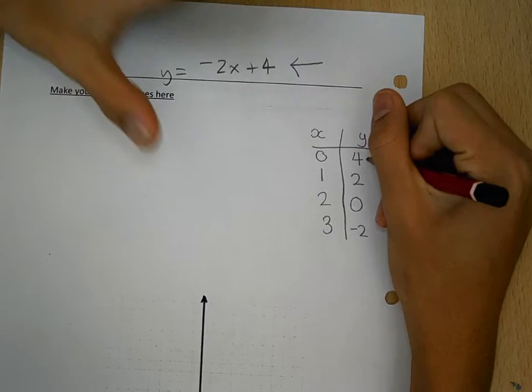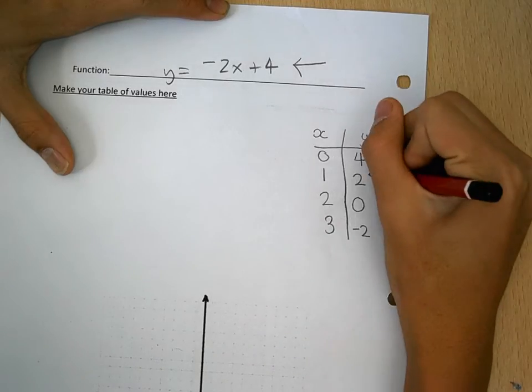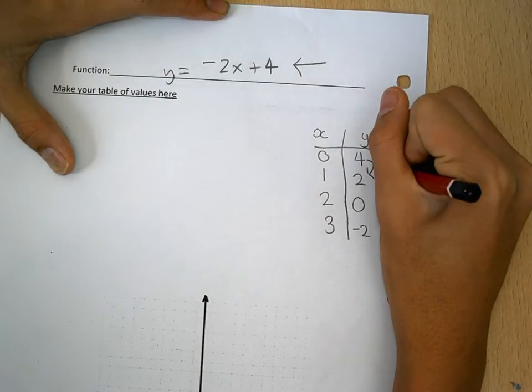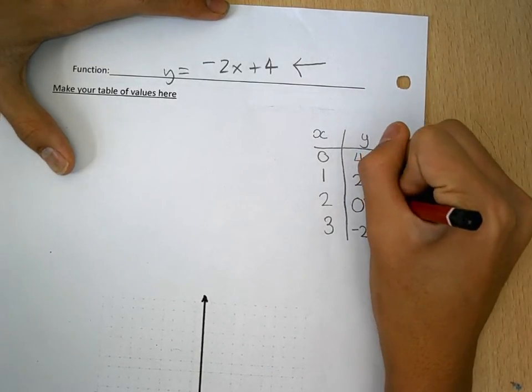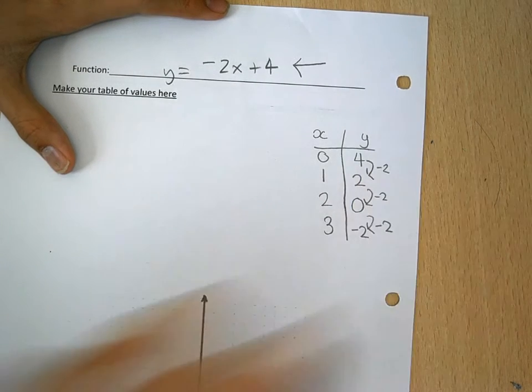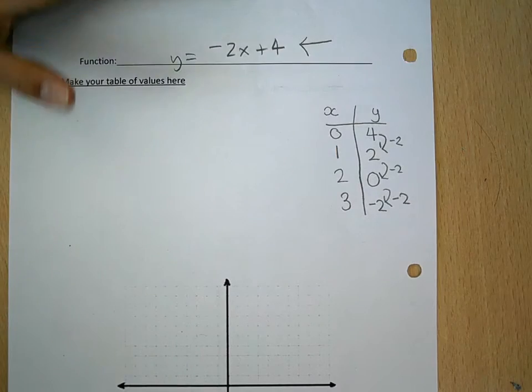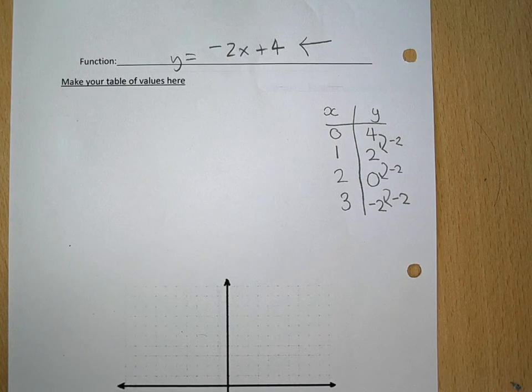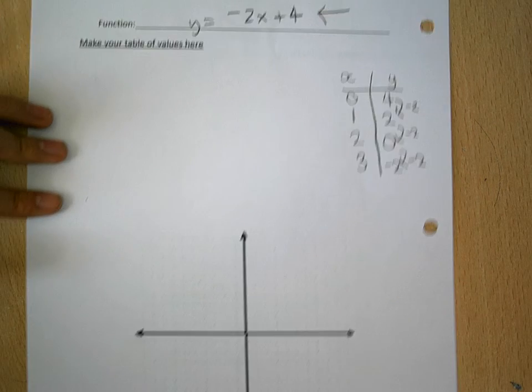You see the pattern - it's minus 2 each time. Once you think you're right, you'll try to make a graph.